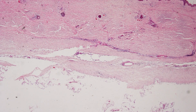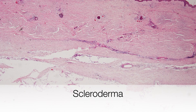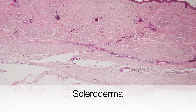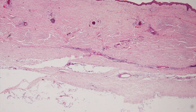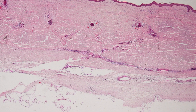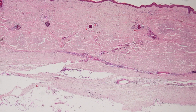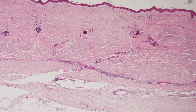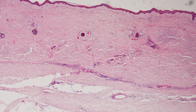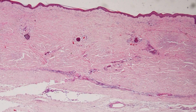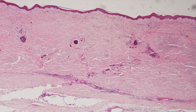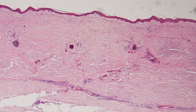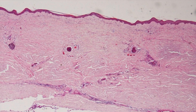This is a condition called scleroderma, where the skin becomes sclerosed or fibrosed, resulting in damage to the blood vessels and causing the overlying epidermis to become thinned and atrophic as a result of hypoxia, because it becomes starved of blood.